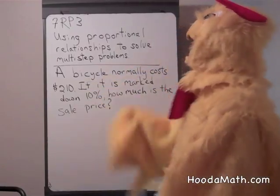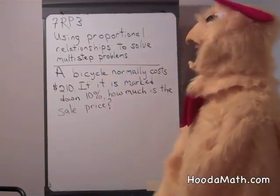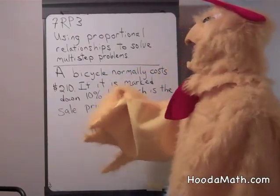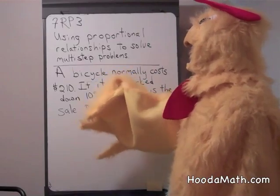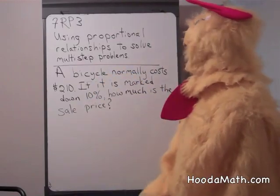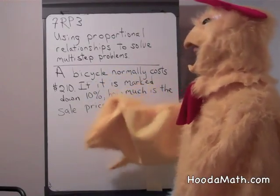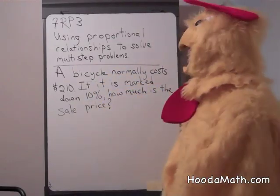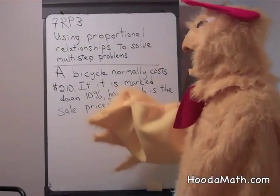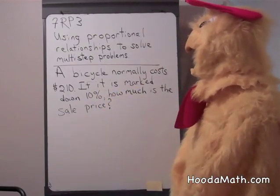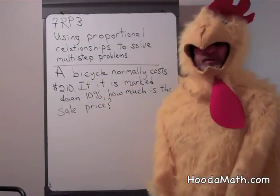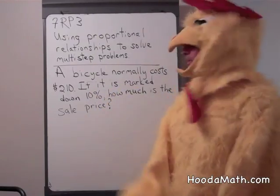Using proportional relationships to solve multi-step problems. A bicycle normally costs $210. If it is marked down 10%, how much is the sale price?